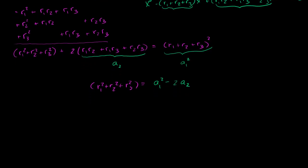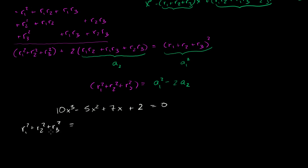To apply this, take the third degree polynomial 10x cubed minus 5x squared plus 7x plus 2 equals 0. You must first make the leading coefficient 1, so divide both sides by 10: x cubed minus one-half x squared plus 7 over 10 x plus one-fifth equals 0.